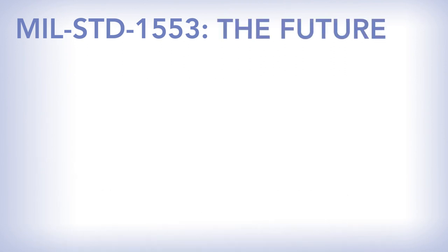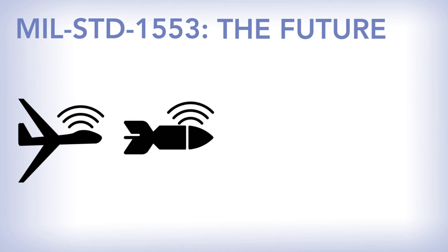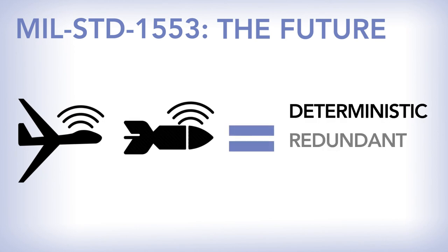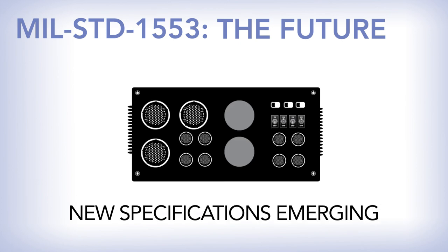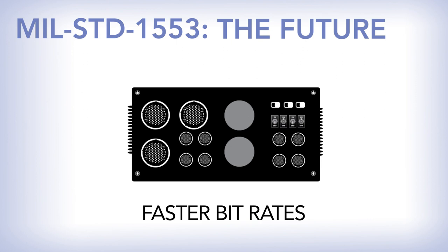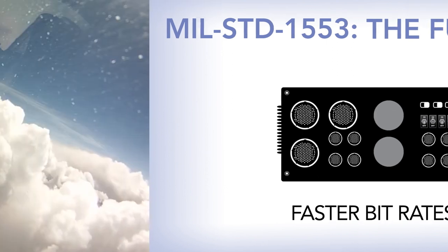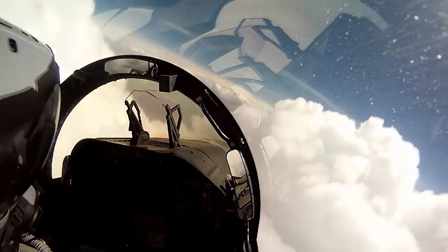Looking toward the future, 1553 is in no danger of being phased out. New applications like unmanned aerial vehicles and smart bombs all take advantage of the deterministic, redundant, low latency 1553 architecture. New specifications are emerging to extend 1553, like faster bit rates to allow more data to go through the system — a must for next generation equipment. Not bad for a piece of technology that's over 40 years old and going strong.